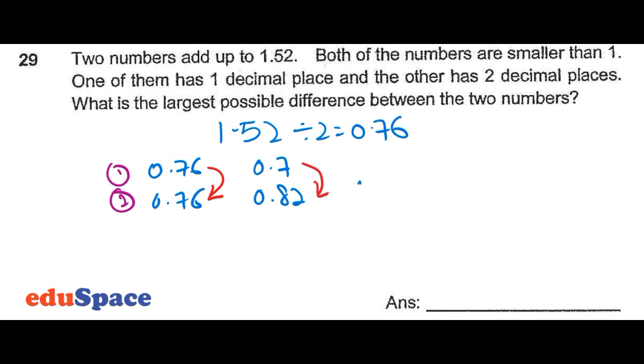So number two will be 0.92 and the first number will be 0.6. The question asks for the possible difference, so we will take 0.92 minus 0.6, which equals 0.32. So the answer will be 0.32.